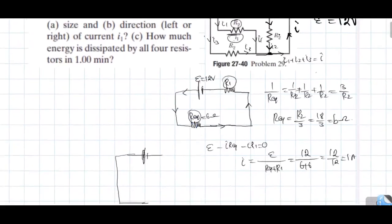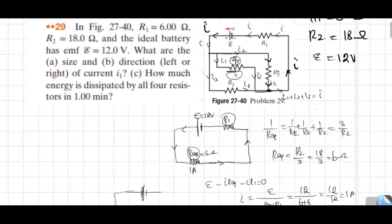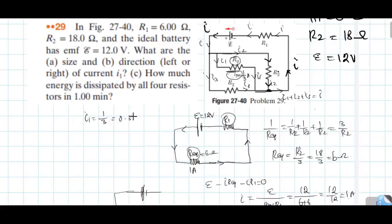R is 1 A, and it is equally distributed to these parallel resistances. The 1 ampere will be equally divided into three parts. So I1 equals I2 equals I3 equals 1 divided by 3 ampere, which is approximately 0.33 A.